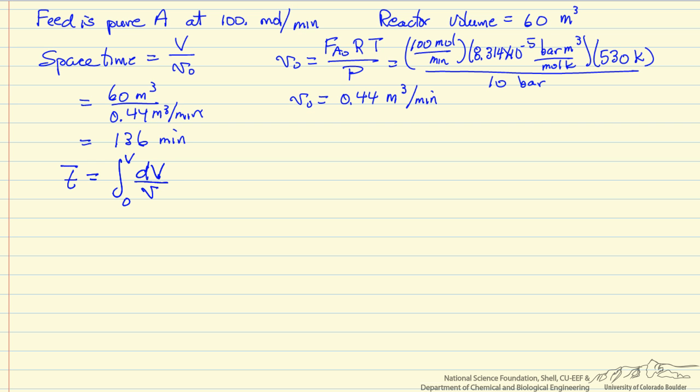We're going to solve this by writing it as a differential equation, namely differentiating this with respect to volume, where the initial condition is that at the inlet, V equals zero, τ equals zero. To solve this equation, we need to know how the volumetric flow rate changes as a function of the cumulative volume in the reactor.